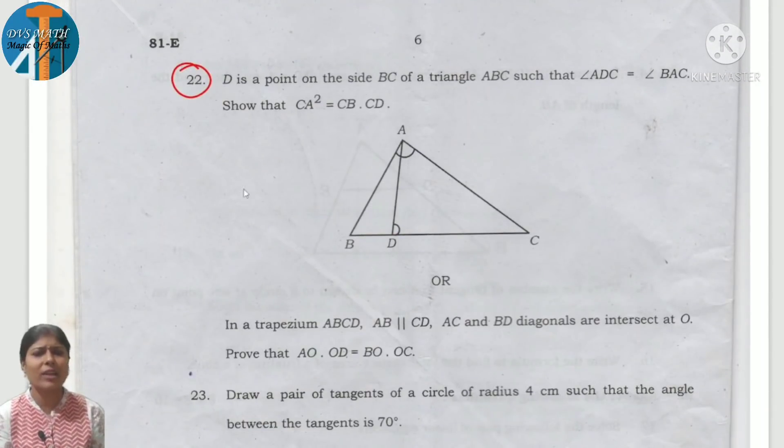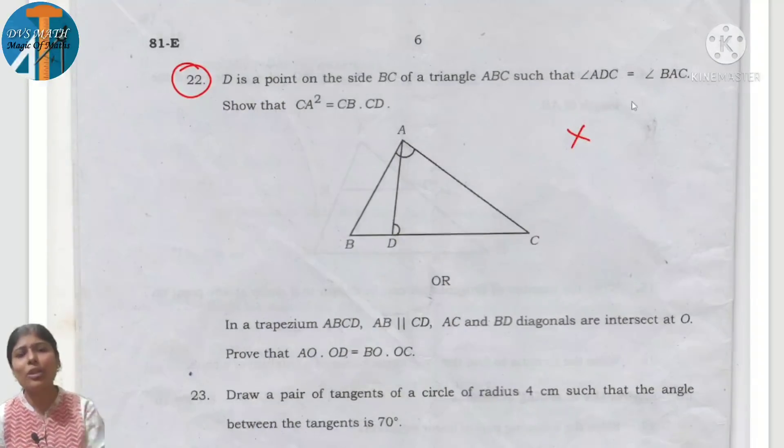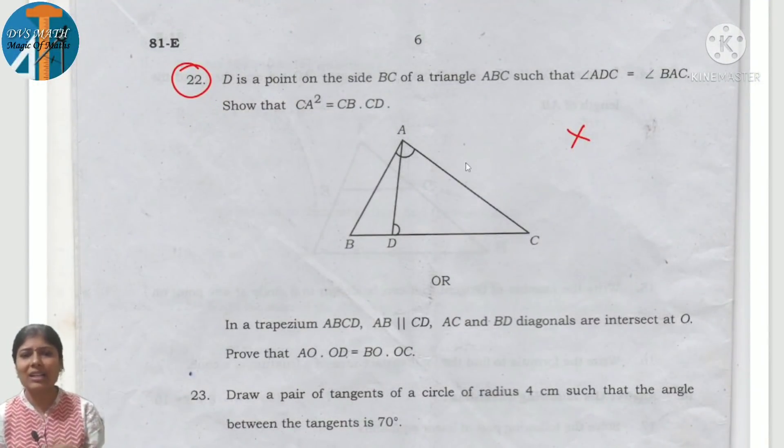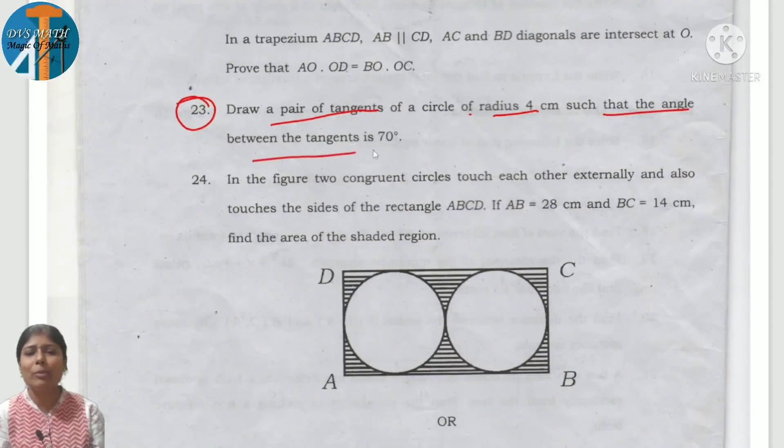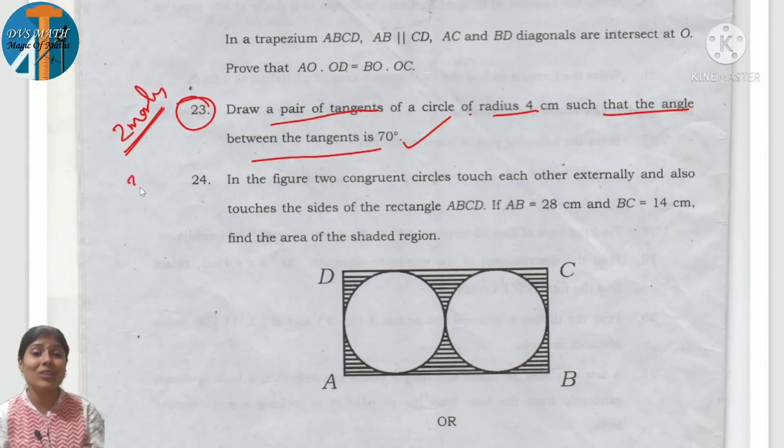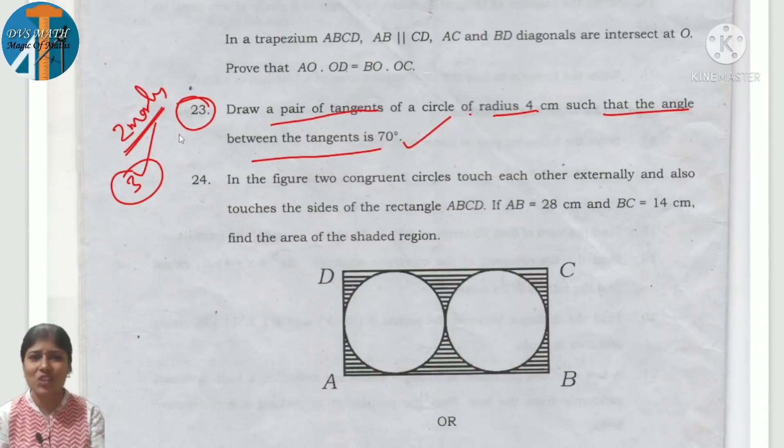Triangle is 2 marks actually, but this time it is not there. Because as per model paper, as per district paper, all 2 marks don't have triangles. Next question: draw a pair of tangents of a circle of radius 4 cm such that the angle between the tangents is 70 degree. This is 2 marks, but this time you have 3 marks. This is one advantage for you. One mark extra for tangent construction.